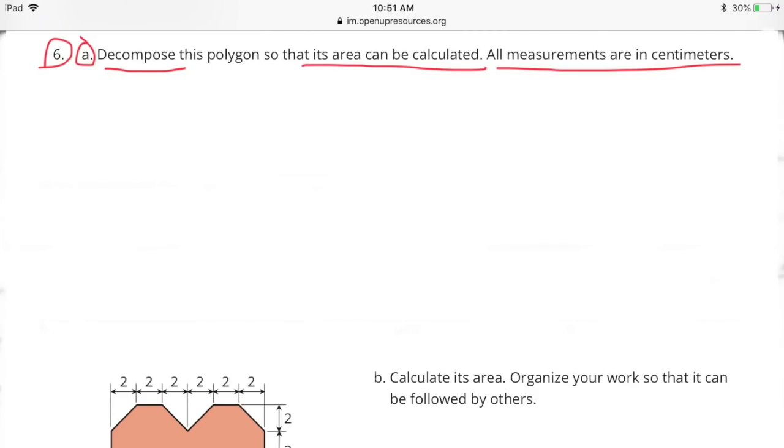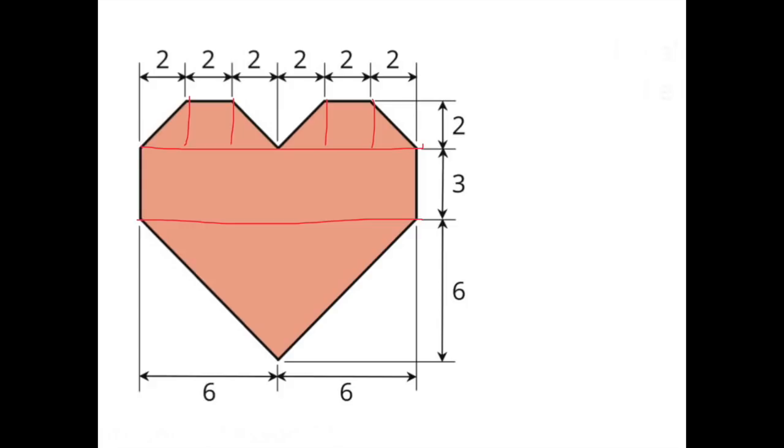Number six. A. Decompose this polygon so that its area can be calculated. All measurements are in centimeters. In the top section of this heart-shaped polygon, you have two squares that are 2 by 2 centimeters. And you have four triangles that are 2 by 2 centimeters. In the middle section of this heart-shaped polygon, you have a rectangle that's 3 centimeters tall and 12 centimeters wide. If you look at the bottom section of this heart-shaped polygon, you have one large triangle that's 6 centimeters tall and 12 centimeters wide.